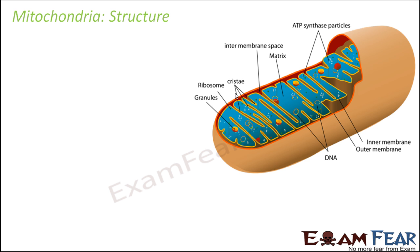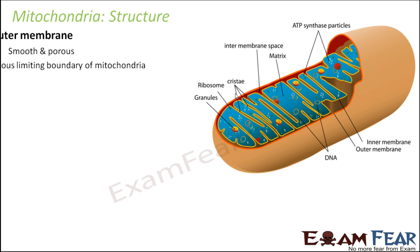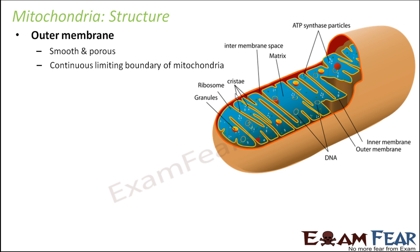Now let us look at the structure of mitochondria in detail. It consists of an outer membrane — you can see this red colored membrane, which is the outermost boundary. The outer membrane is smooth and porous, forming a continuous limiting boundary of mitochondria. It is not interrupted anywhere; it is smooth but has small pores.